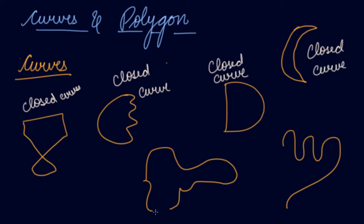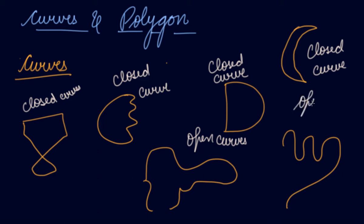Now, this figure has a curve but this figure is open. There is no line joining this figure, so this is an open curve. Again, this figure is a curve but there is no joining to it — these are not closed. These are open figures, so again this is an open curve.